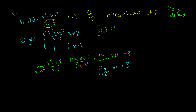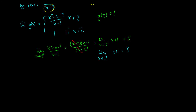Have we found a continuous function by giving it this extra condition? The answer is also no, because the limit as x goes to 2 of our function must equal the point at 2 in the function. We know the limit equals 3, and g of 2 equals 1, and these two are not equal, so the function is still discontinuous at x equals 2.